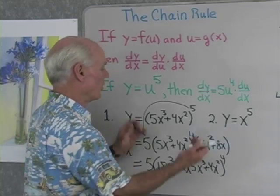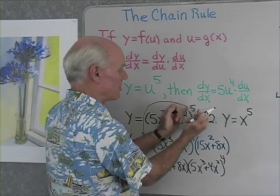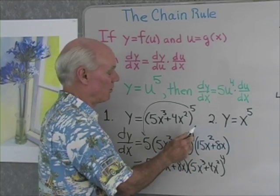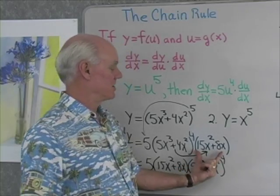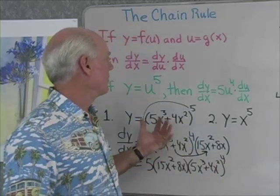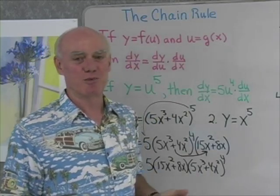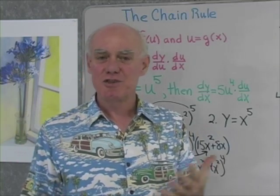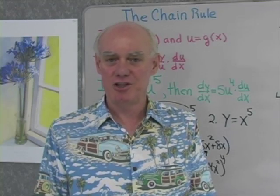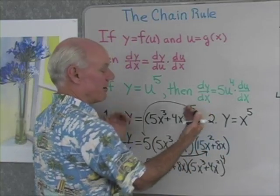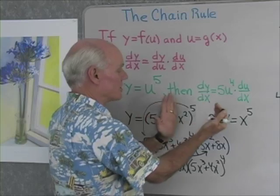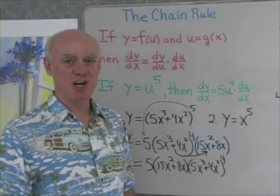The point is with the chain rule, when you have exponents like this — some base raised to the fifth power — it's going to be that exponent times the base, don't change it, to a power 1 less, then you differentiate the base. This is the du/dx part of the chain rule. We don't usually get functions written in that u-form. What the chain rule does is give us a way to look at functions we already have and extend our differentiation rules. This looks just like a function of x, but we're thinking of it as u to the fifth power where u itself is a function of x.